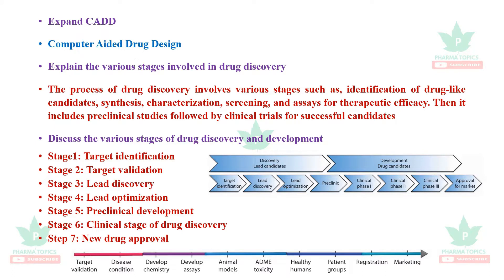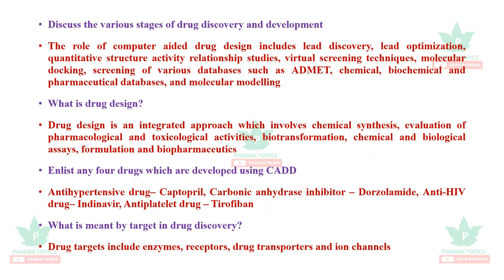Discuss the various stages of drug discovery and development. You can remember seven stages: (1) target identification — which protein is disturbed in a particular disease; (2) target validation — whether inhibiting that protein modifies the disease; (3) identification of leads; (4) optimization of leads; (5) pre-clinical development; (6) clinical stage; and (7) new drug approval. This schematic diagram can also be presented in examinations.